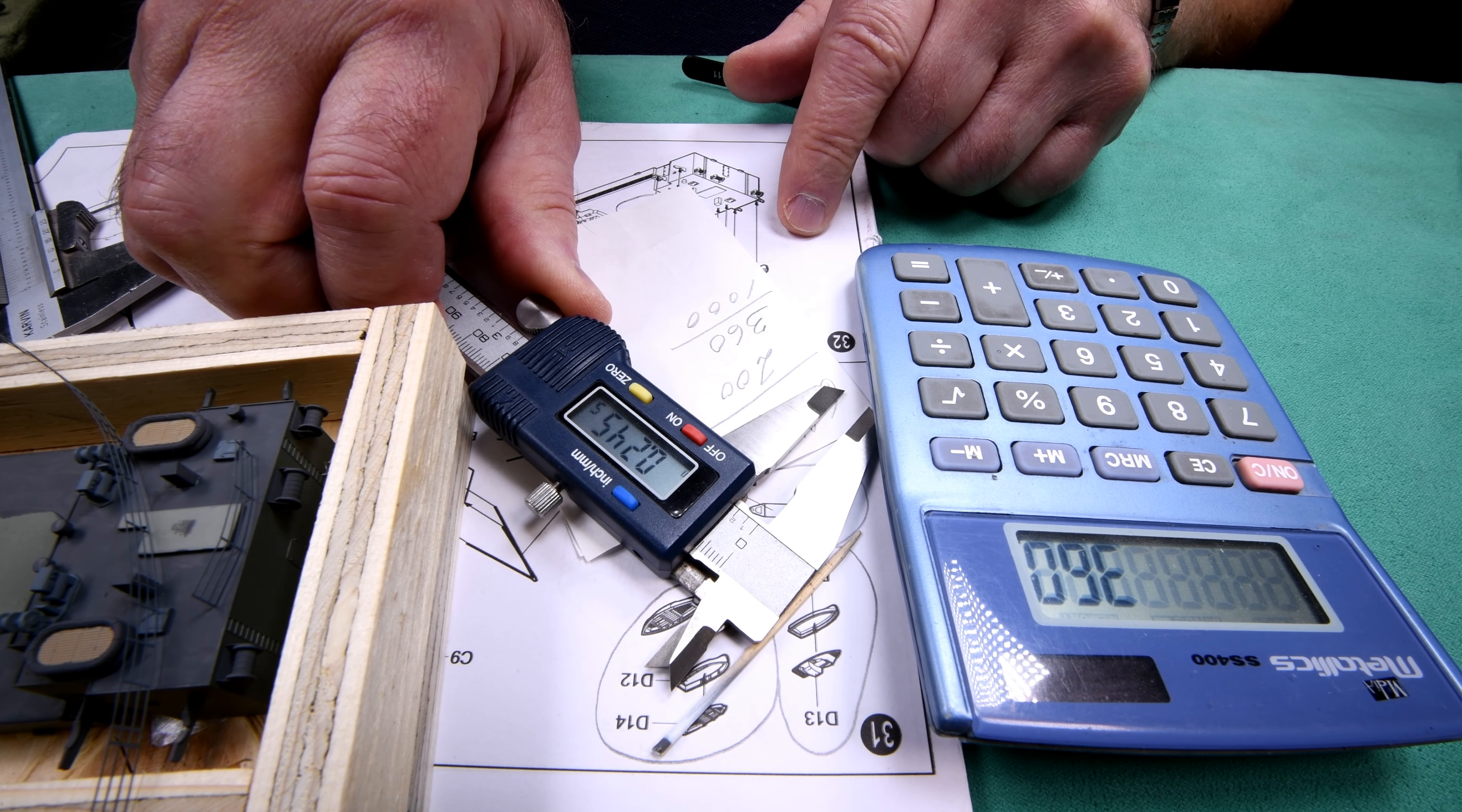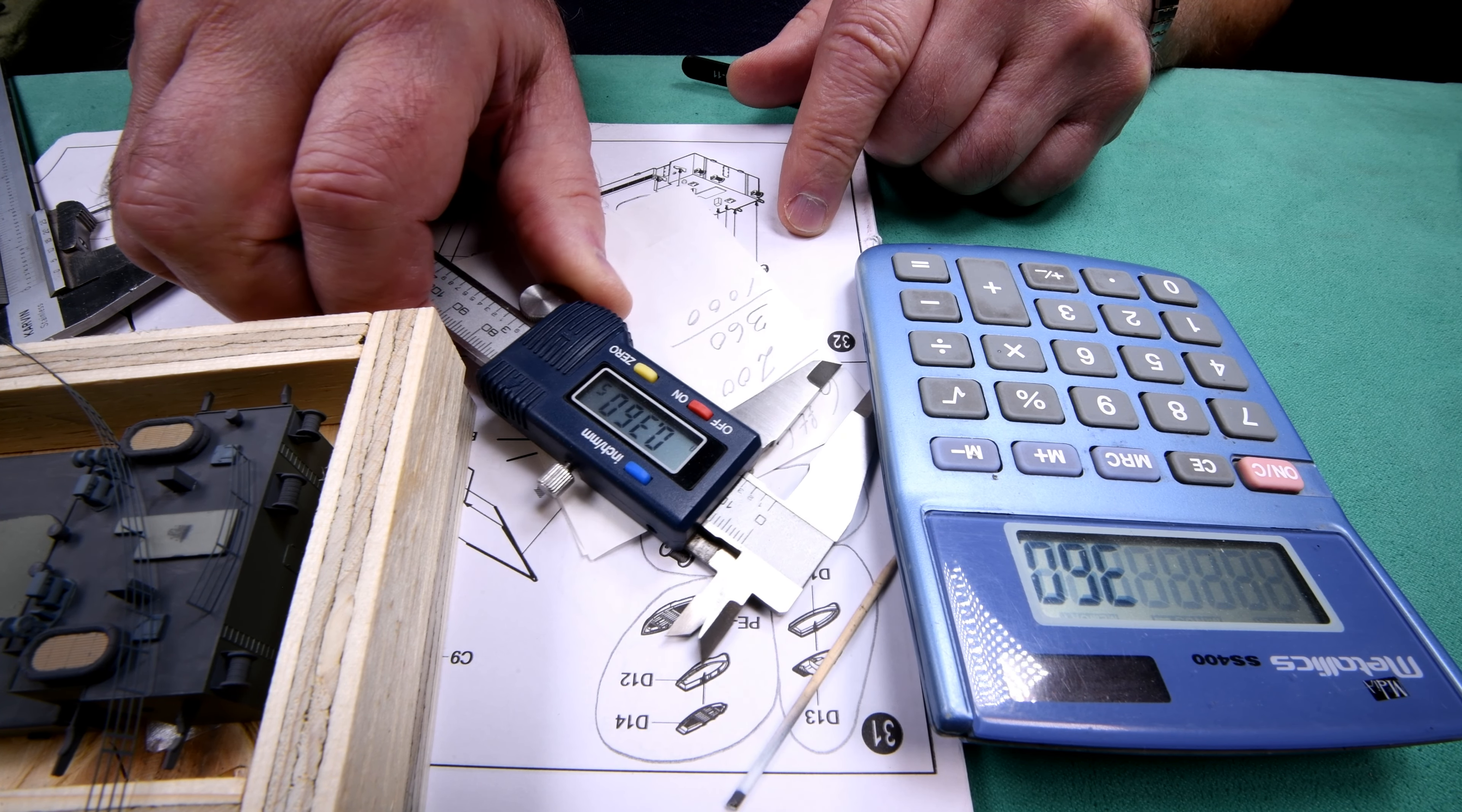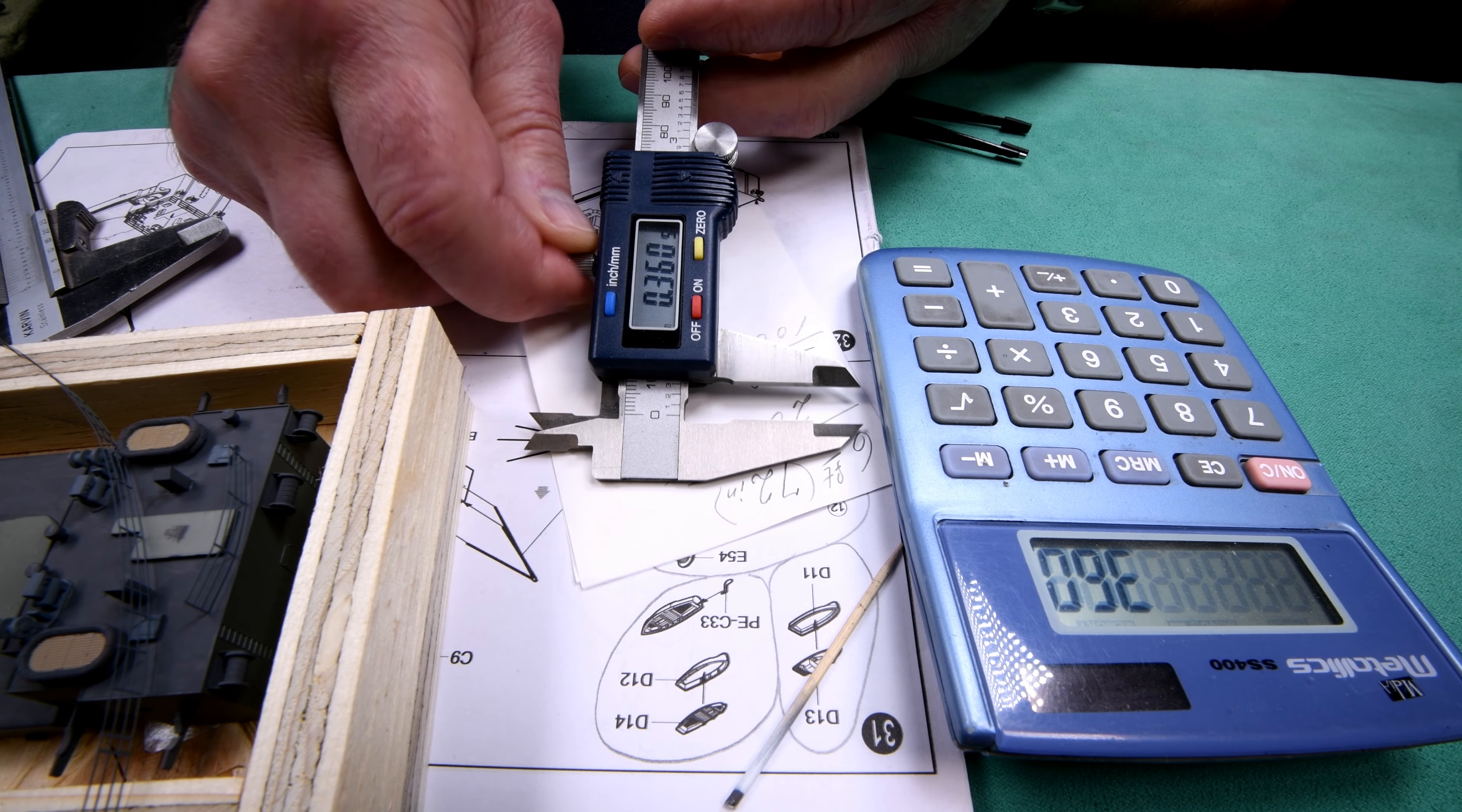Okay, so we want to get 360 thousandths. I may have to do this off camera to get it just right. We're getting there. Just a smidgen. Oh, too much.